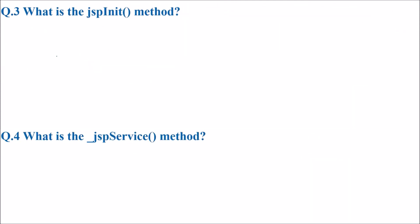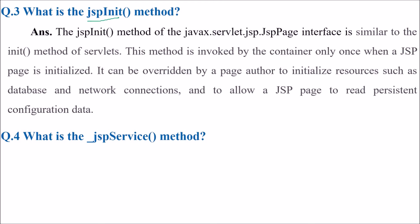What is JSP init and what does it do? The JSP init method of javax.Servlet.JSP — this method is found in that import. The JSP page interface is similar to the init method found in the servlet. This method will be invoked by the container only once when a JSP page is initialized, and it can be used by the page author to initialize resources like databases and network connections.